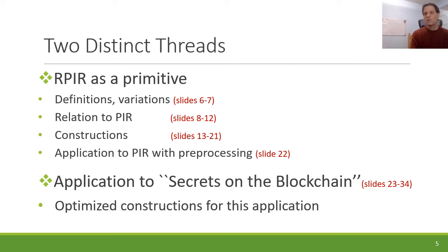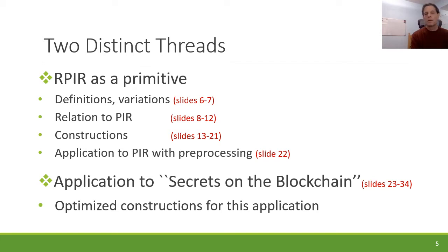This work has two mostly orthogonal threads. One is looking at RPIR as a primitive: defining it, looking at variations, how it relates to PIR, how to construct it, and the application to PIR with preprocessing. The second line of work is the application to Secrets on the Blockchain, which was our motivation for this work, with some optimizations specific to that application.